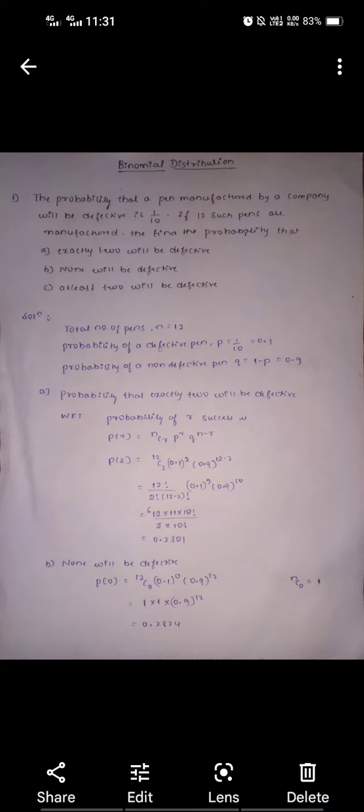Part B: none will be defective means R equals 0. Hence P(0) equals 12C0 times 0.1 to the power 0 times 0.9 to the power 12. We know that nC0 equals 1. Solving this, you get the value 0.2824.